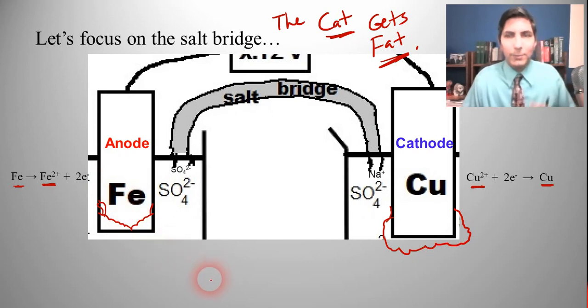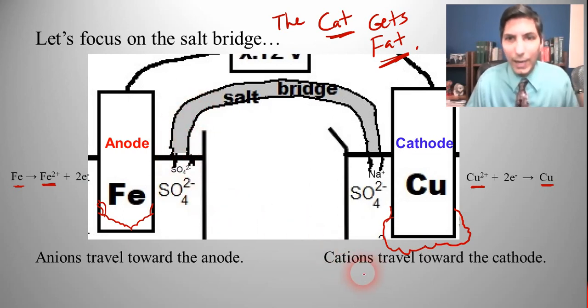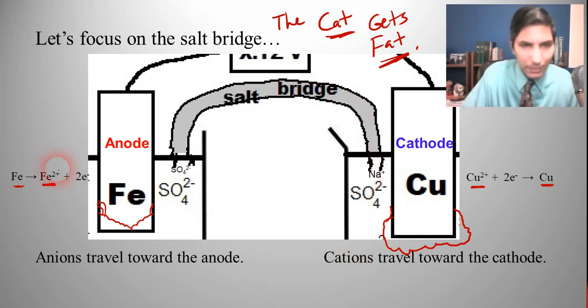And so as we look at the salt bridge, we saw that the anions - the sulfate here is an anion - anions travel through the salt bridge toward the anode. And likewise, the cations will travel toward the cathode. So hopefully that kind of makes sense. Anions and anode, same prefix there.